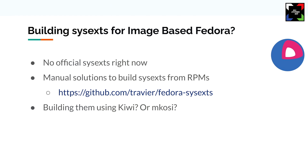What about Fedora? There's nothing really official being built yet — no official sysext built and signed by the distribution. So I've just made my own: a script to build a system extension from RPMs and ship them as erofs files. We could integrate that into Kiwi or MKOSI, but it's still an open question. I think it's probably doable and likely something we'll investigate.